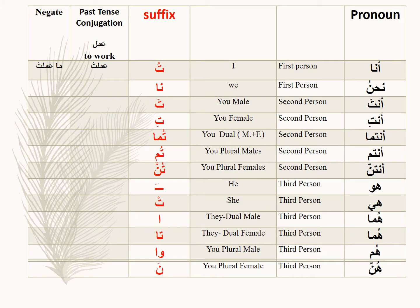Now I want you to practice here by yourself. While you're practicing, try to memorize all these suffixes — you should memorize them. I will do the first one for you and then you do the rest. I also want you to negate: the first column you conjugate past tense, then you negate past tense. For ana using the verb 'amala' — to work: amiltu — I worked. How do you say I did not work? Ma amiltu — I did not work. Please try to finish the rest of them.